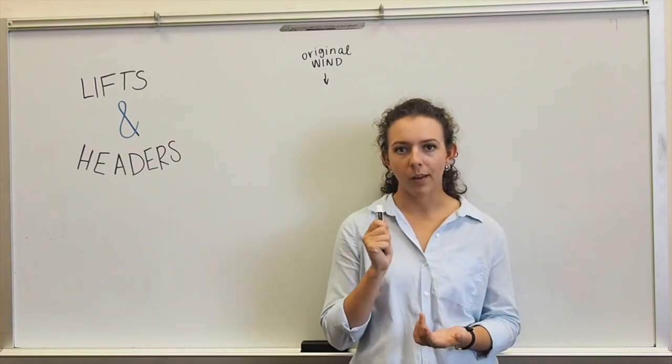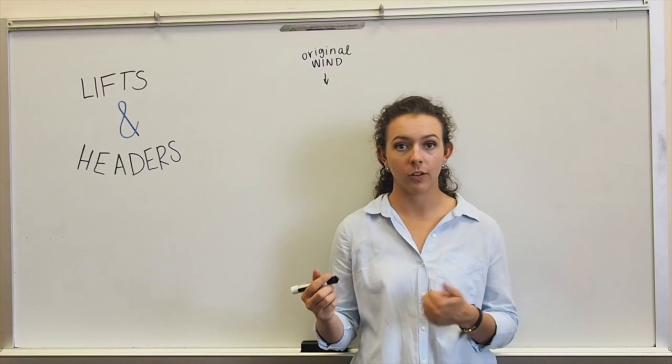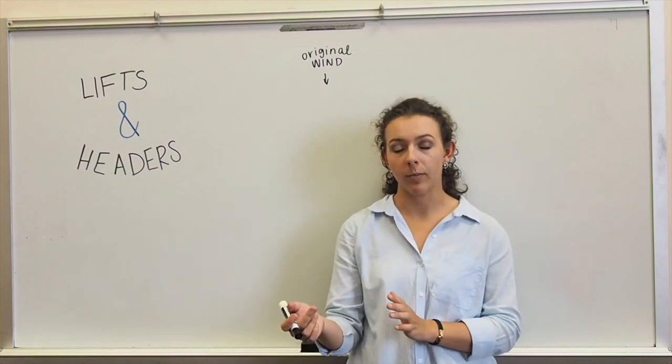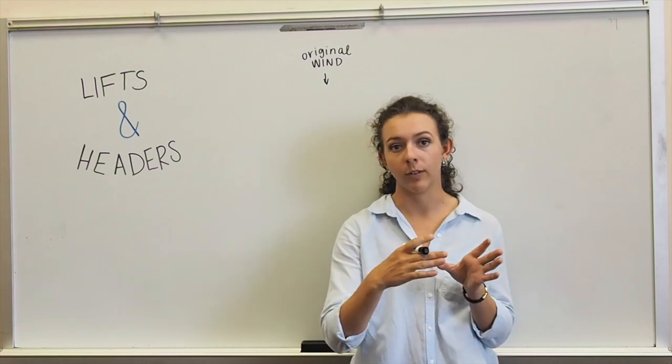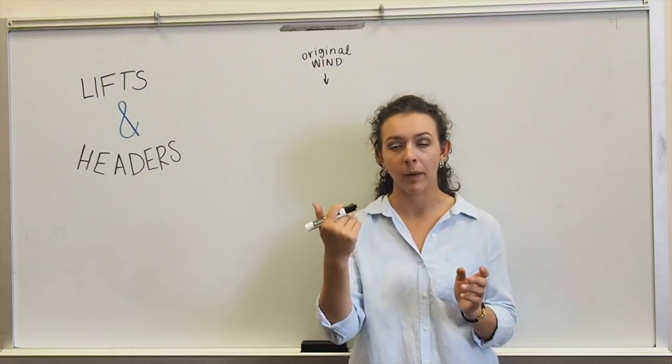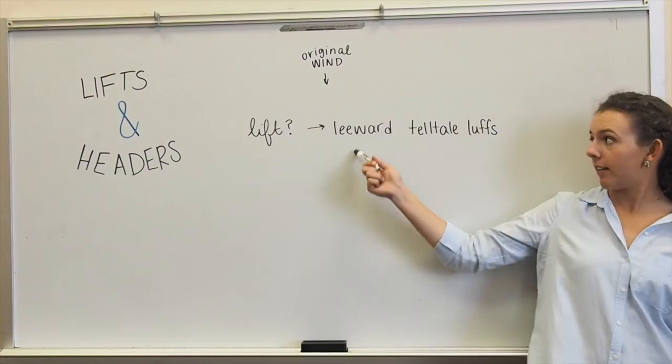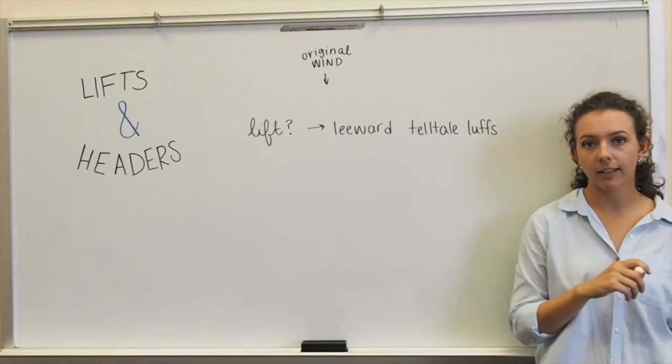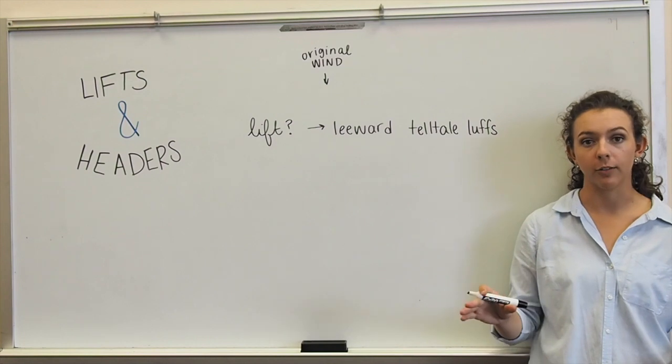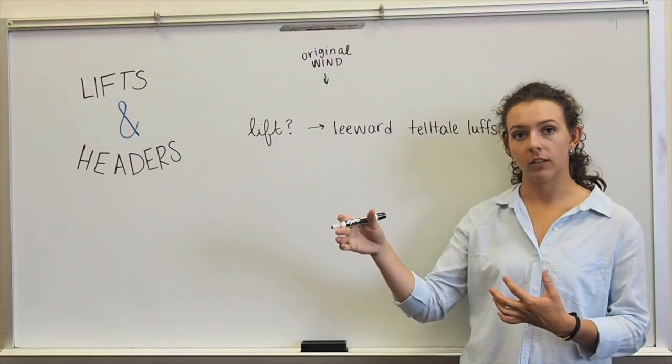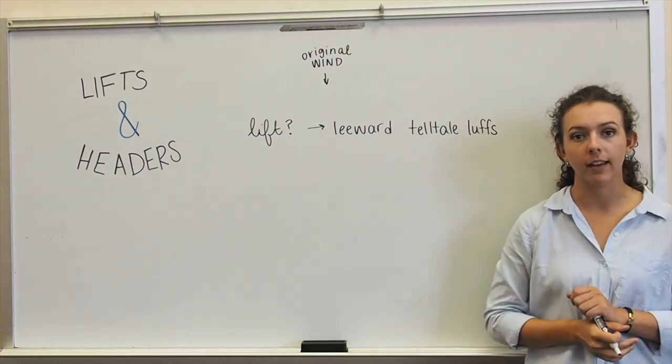Now, if you get a wind shift and it shifts to the stern, so that means you get a lift, your leeward telltale is going to start flapping. You always head away from whichever telltale is flapping to get the flow back on the telltale to make it fly straight. So you'll get a lift if your leeward telltale starts luffing. By all means, you always want to make sure that the leeward telltale is happy. So you want to adjust your boat position to get that flying straight back again.